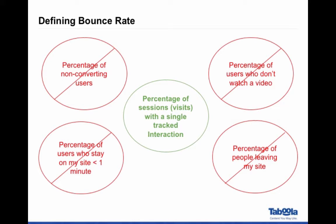When we're talking about bounce rate here, I'm talking about the bounce rate as reported by your analytics package. Most of the folks I work with use Google Analytics because it's free up to a certain point. A lot of folks use Omniture. I'll also touch on some other analytics packages like Chartbeat and Crazy Egg. But really, we're talking about the bounce rate as you would see it in Google Analytics or any other package that you have.